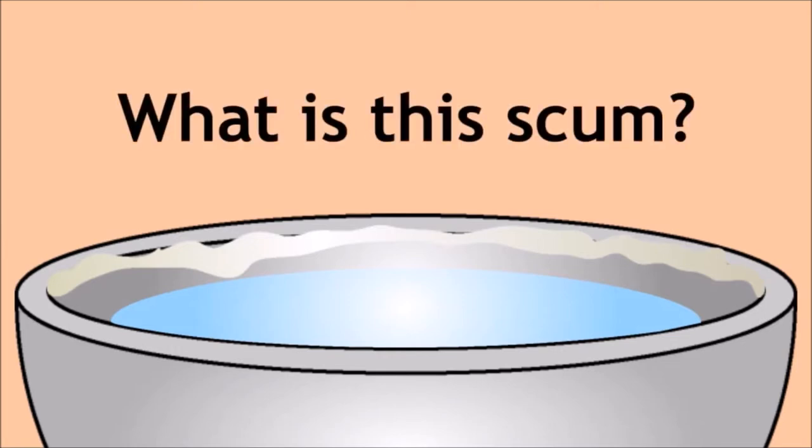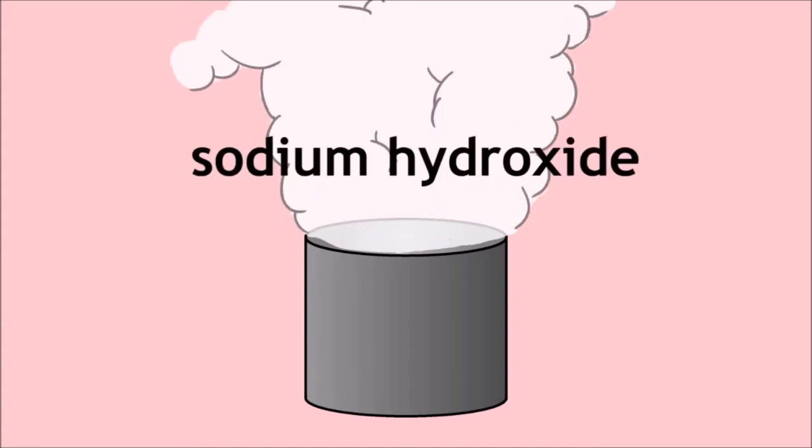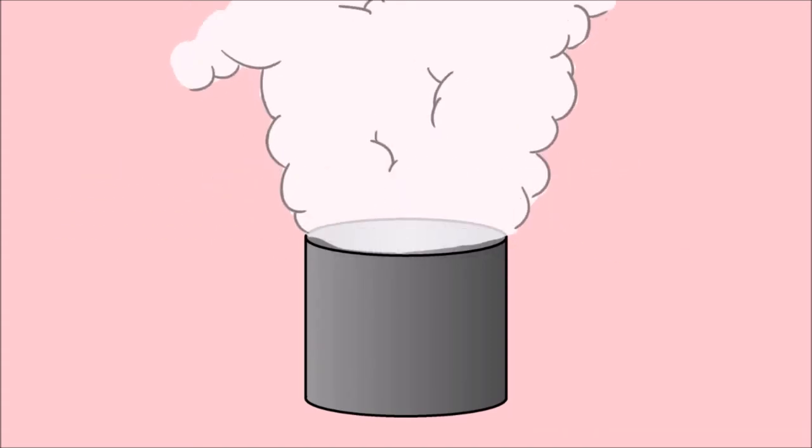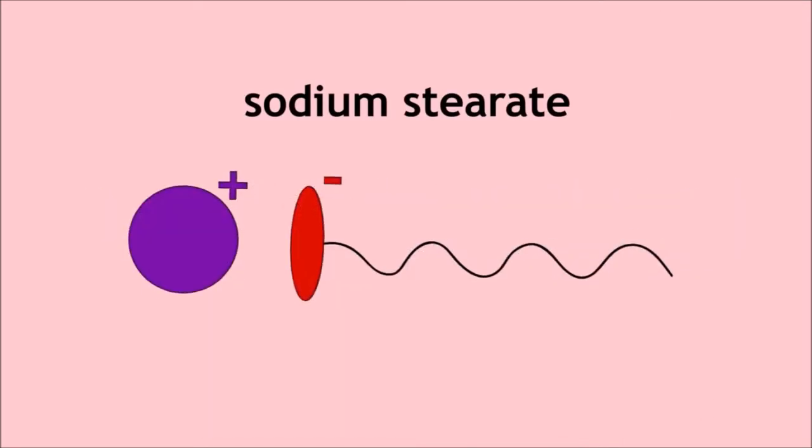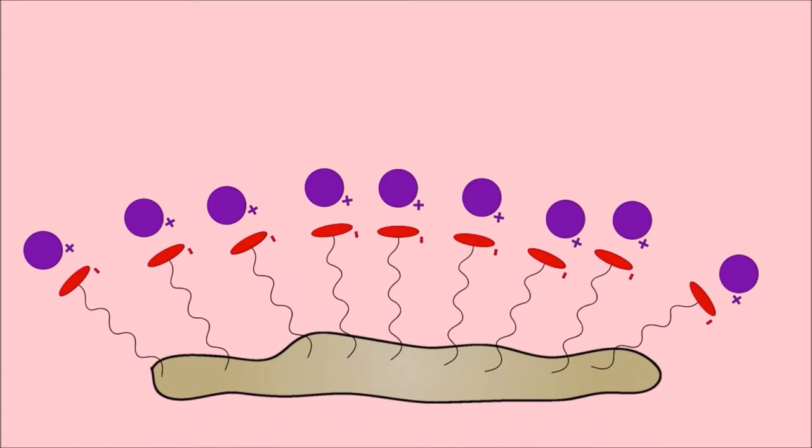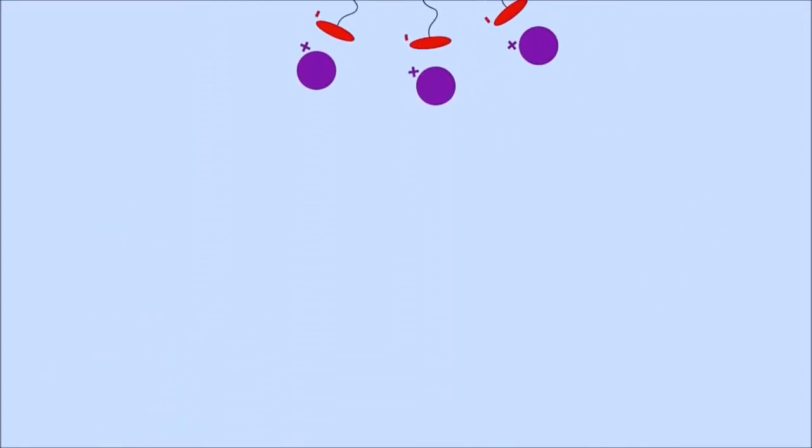So what is this scum? Well, soap is made by boiling natural fats and oils with sodium hydroxide. The soap molecules, for example sodium stearate, have a long tail which is attracted to oil or dirt, and the sodium ion end which is attracted to water. In this way dirt is lifted off your hand and the clothes, and is carried away by the water.